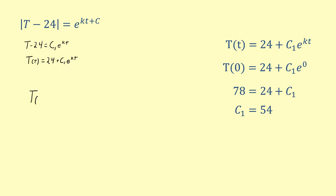Finally, we need to solve for k. Our current equation is capital T of t equals 24 plus 54 times e to the kt. Plugging in 53 for capital T of t and 28 for t, we can solve for k. K is approximately equal to negative 0.0222.